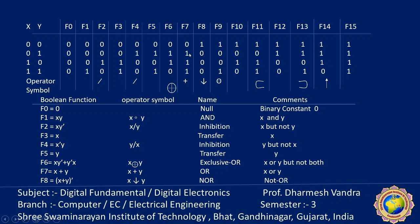F7: when both inputs are 0 the output is 0, and all remaining combinations give 1. So it is simply the OR function, x OR y. F8 is the complement of OR — so it is called NOT-OR, or NOR. The symbol uses a downside arrow: x ↓ y equals NOR gate, indicated by (x+y)̄.